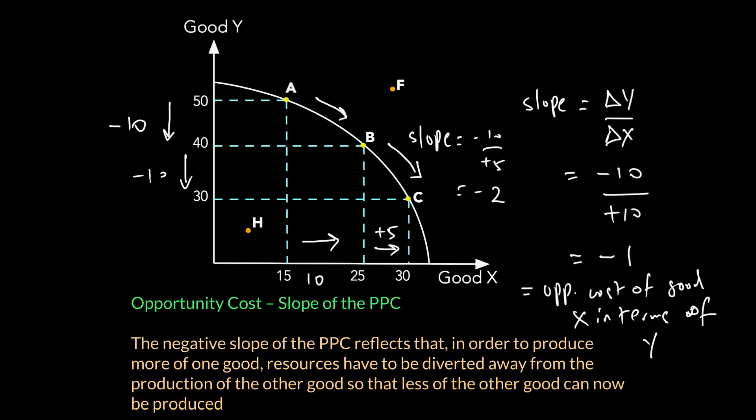The opportunity cost rises from −1 to −2 as we move along the curve. The negative slope of the PPC tells us that as you make choices and get more of one good, you must get less of another, because resources are diverted from producing Y toward producing X. There is always an opportunity cost when moving from one point on the curve to another.